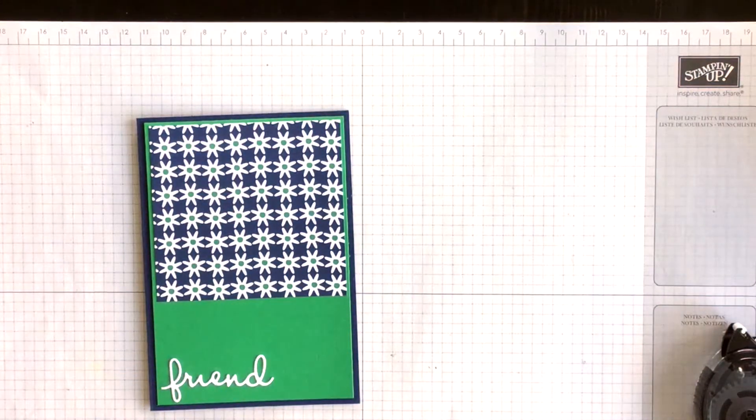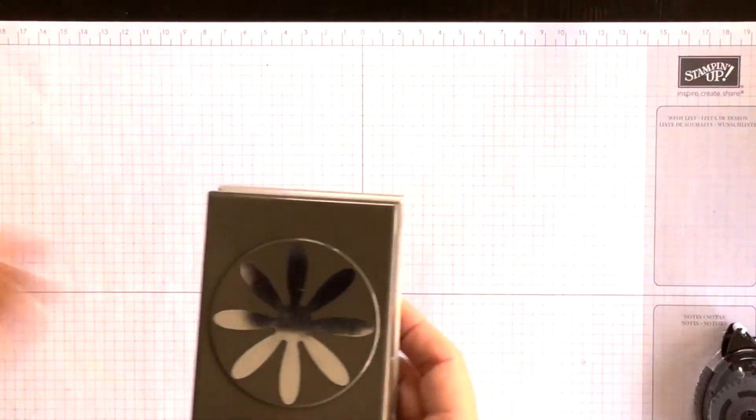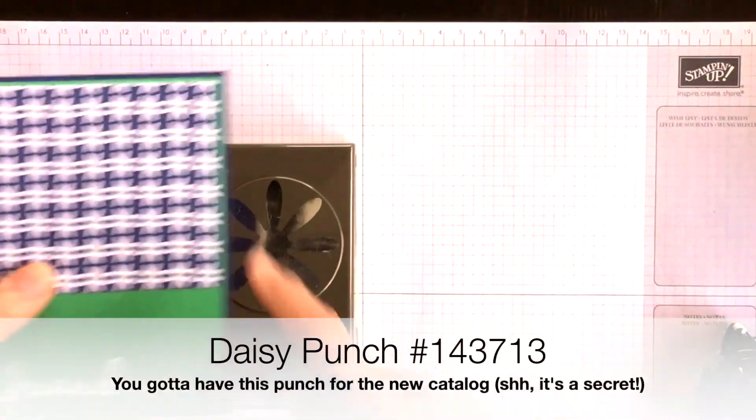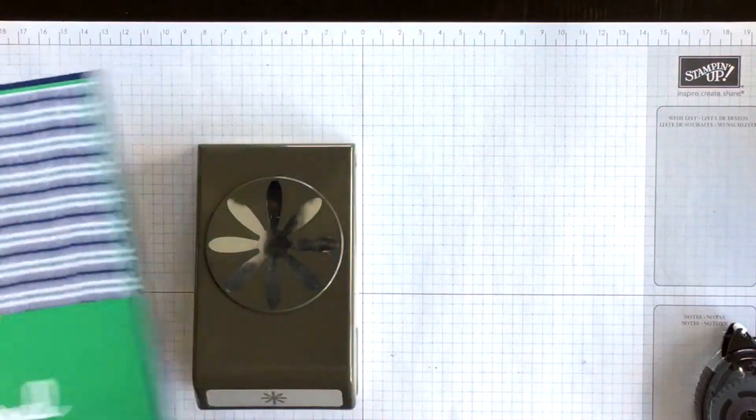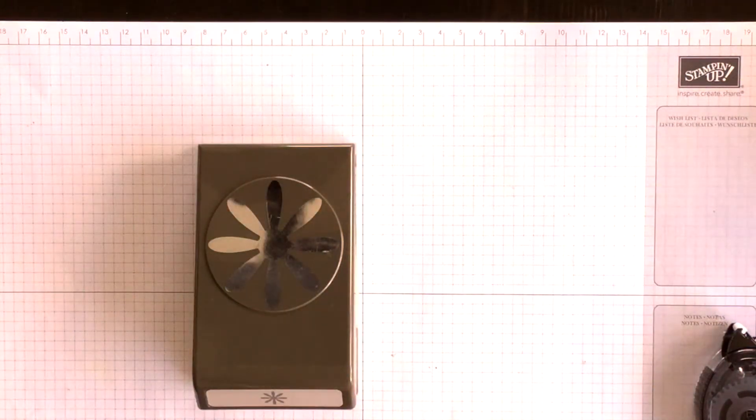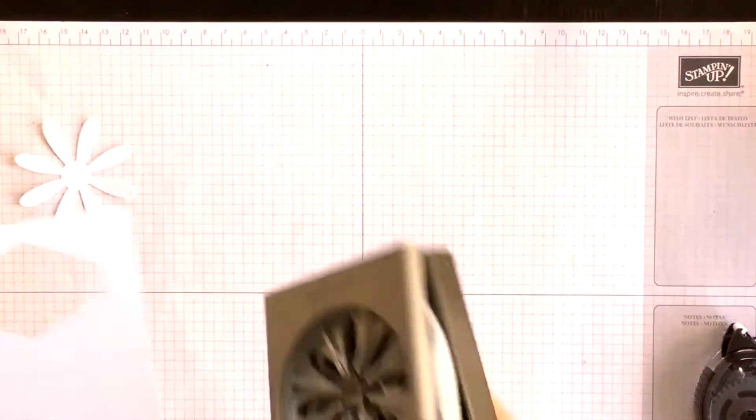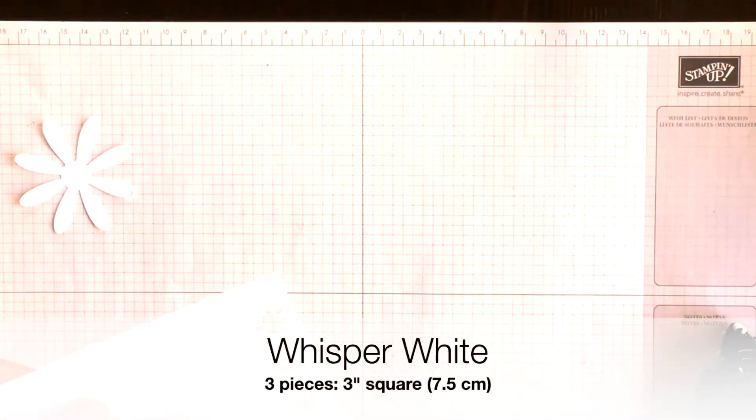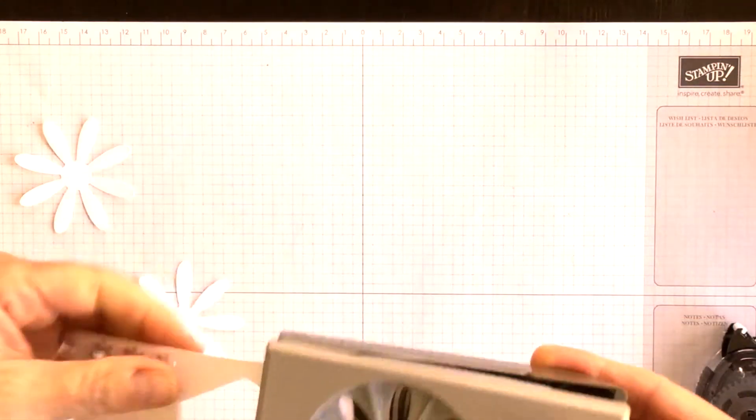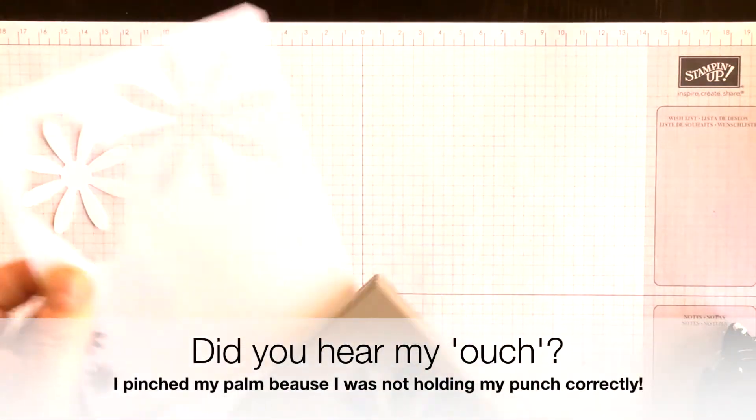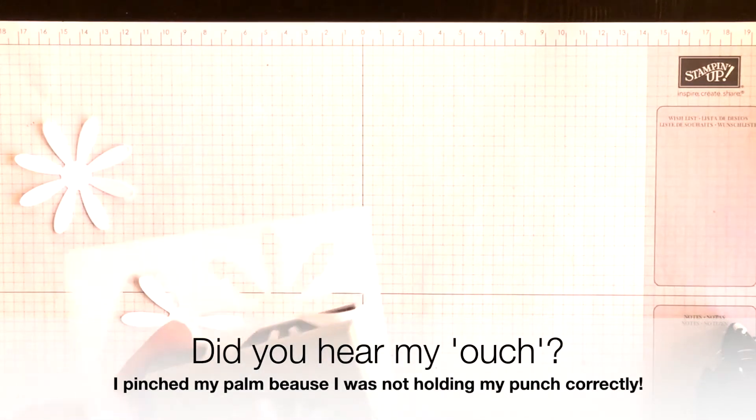So I'm going to use my Daisy Punch and I'm going to make some coordinating daisy to match the pattern in my Designer Series Paper. So I punched one out before the video began just for looking at layout. Here's a second one and I think I'm going to do a third one.